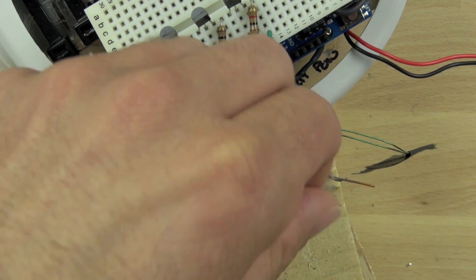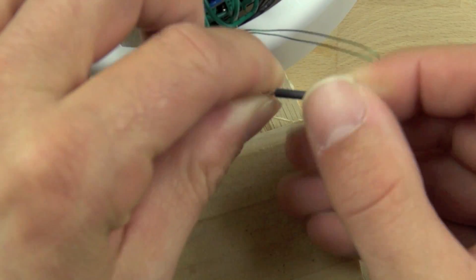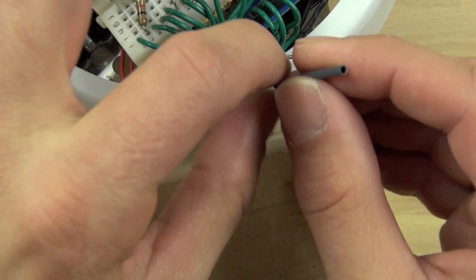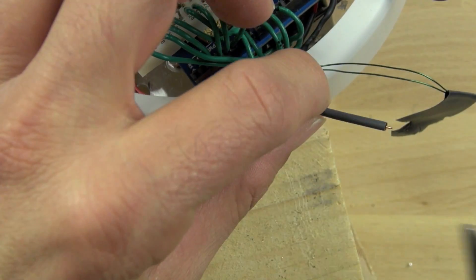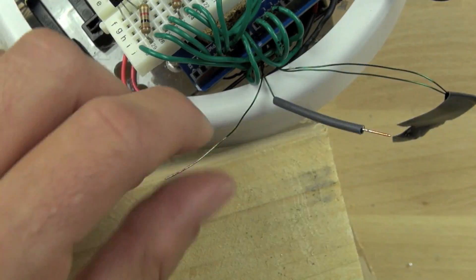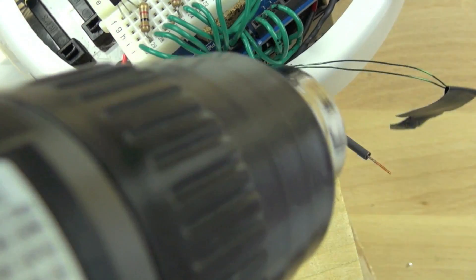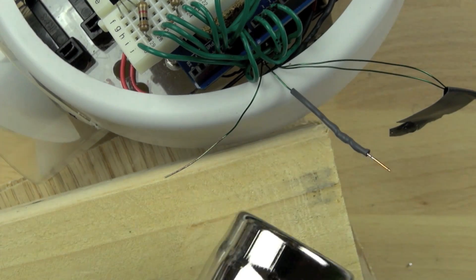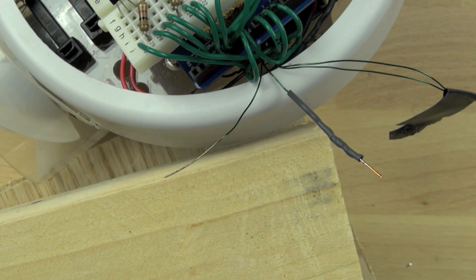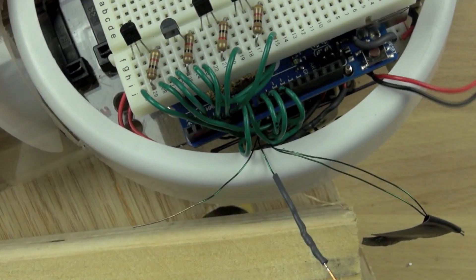To prevent any shorting we're going to take some heat shrink tubing and slide it right over that joint. Use our pliers to pull it down just a little bit. We want about a quarter of an inch exposed and then we're going to use our heat gun to get that heat shrink tubing to shrink around our wire and protect the new connection.